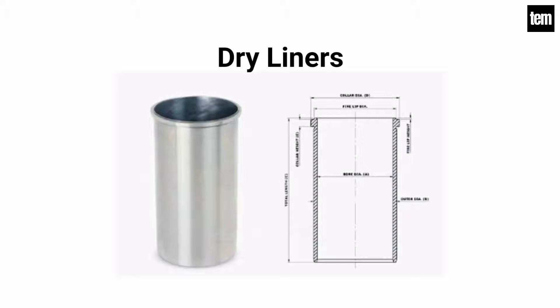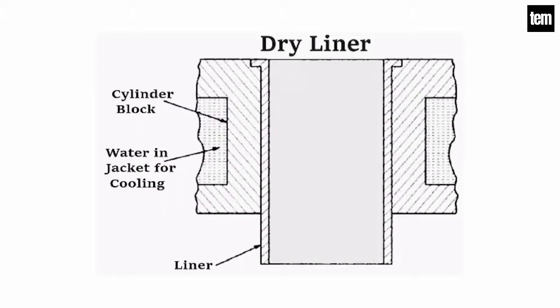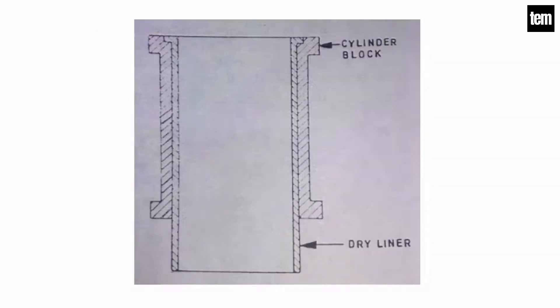Dry liners are made in the shape of a barrel having a flange at the top. The flange keeps the liner in position in the cylinder block. The perfect contact of the liner with the cylinder block is necessary for effective cooling of the liner. The dry liners are not in direct contact with cooling water. The gas pressure, piston thrust, and impact loading during combustion are resisted by the combined thickness of the liner and the cylinder. Therefore, dry liners are thinner.